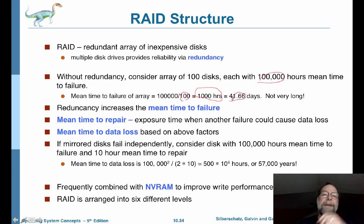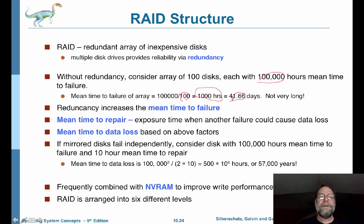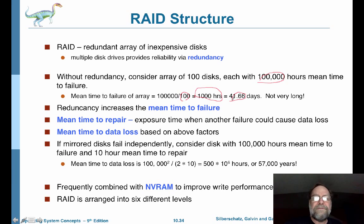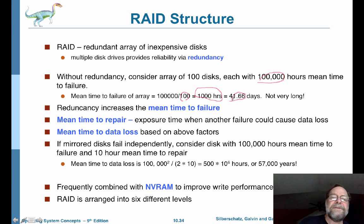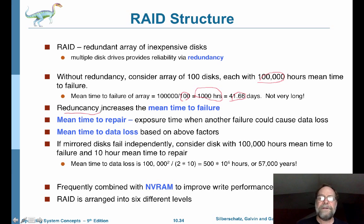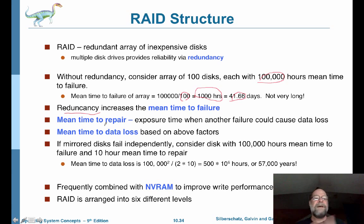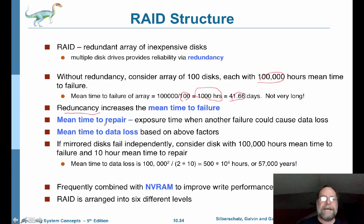That's not a very long time if you're running a server, because when that happens the whole server goes down. So the idea of redundancy is to increase the mean time to failure so we don't have a failure happening every 41 days. If we don't have failures, then we don't have to worry about data loss because the hard drives are there all the time.